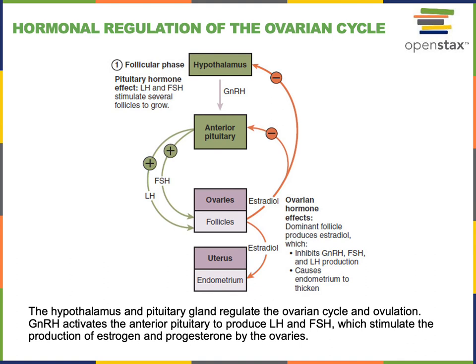The name follicle-stimulating hormone comes from the fact that FSH stimulates the growth of ovarian follicles — the support cells surrounding the immature egg cell. As the ovarian follicles grow and stimulate the maturation of the egg cell, they produce increasing levels of the estrogen known as estradiol. Estradiol is produced during the follicular phase of the ovarian cycle and has effects throughout the body, including stimulating the growth of the inner lining of the uterus, known as the endometrium.